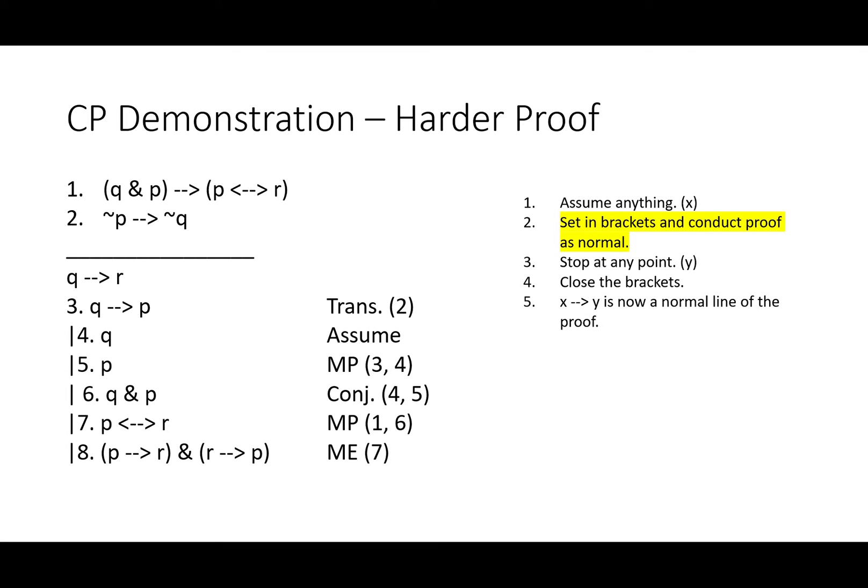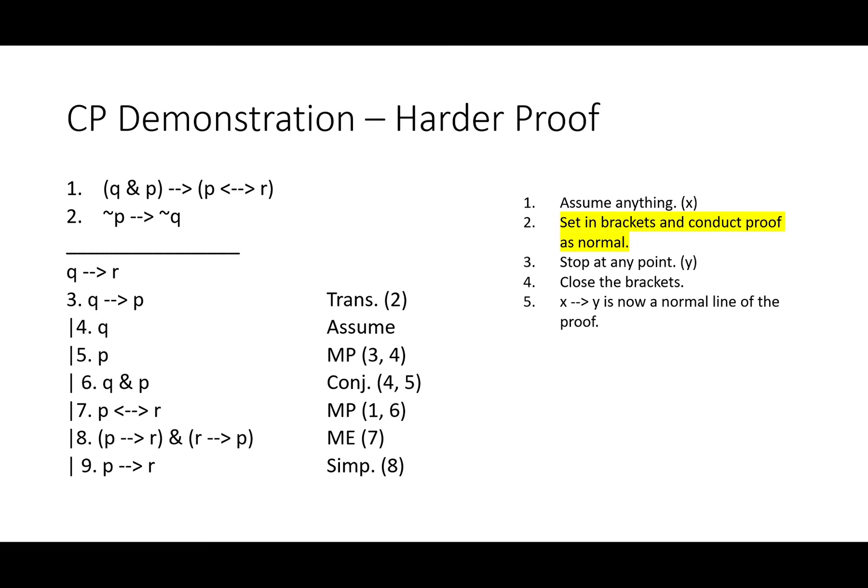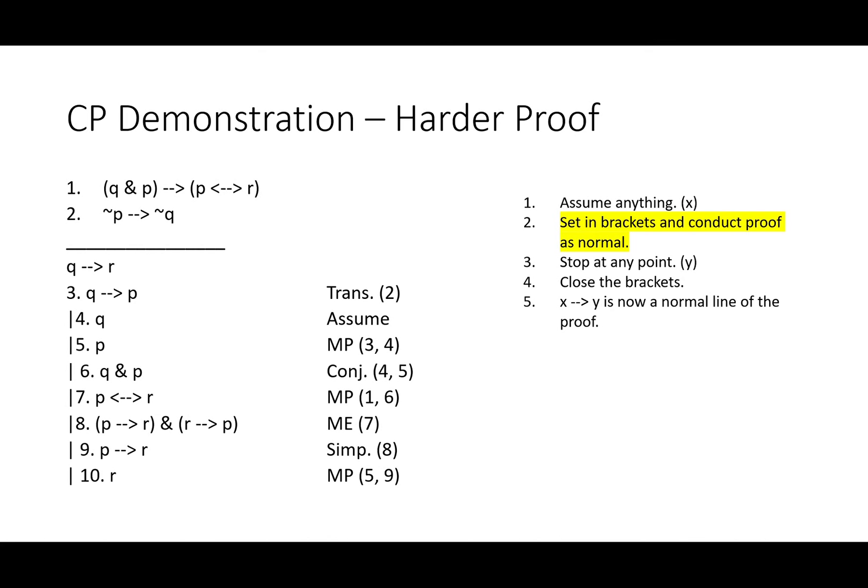A modus ponens will get us to P if and only if R. There's only one rule that we can apply to that biconditional, so that's an easy choice, material equivalence. We'll use the one with the conditionals, and we'll simplify out the one that we need, if P then R. We could do simplification if R then P, but we don't have any real need to. Because we've got P, we've got if P then R, we're trying to get to R, we've got everything we need. We're one more modus ponens away.